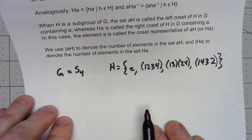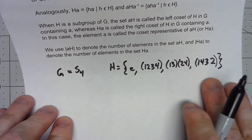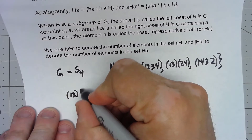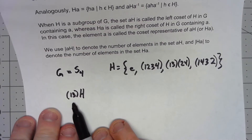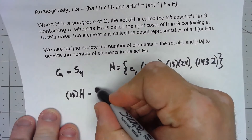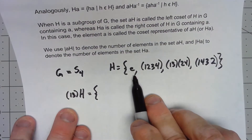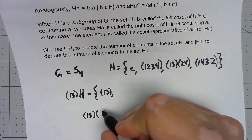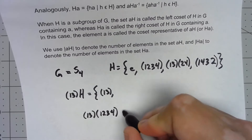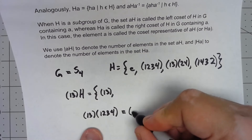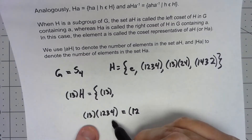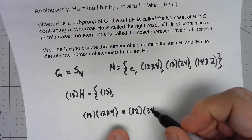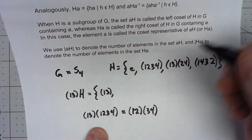We're going to take any element of G — it does not have to be an element of H. So for example let's take the element (1 3). To compute (1 3)H we're taking (1 3) times each element of H. Well, (1 3) times the identity is of course just going to be (1 3). If we do (1 3) times (1 2 3 4): one goes to two, two goes to three, three goes back to one, and four goes to one, one goes to three — so it's (1 2 3 4).